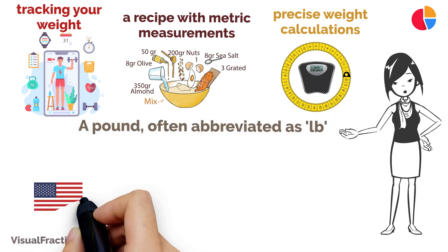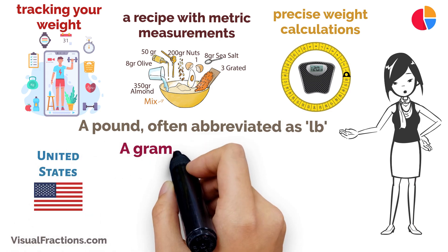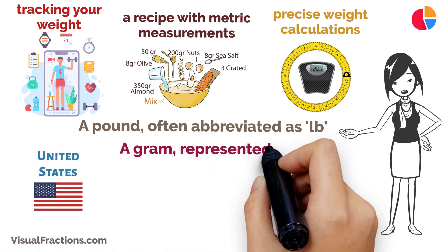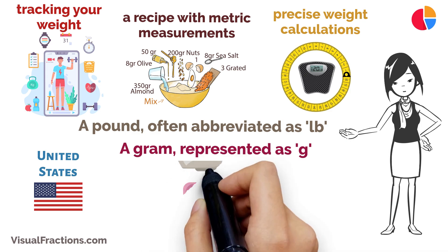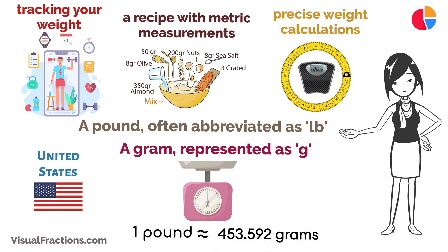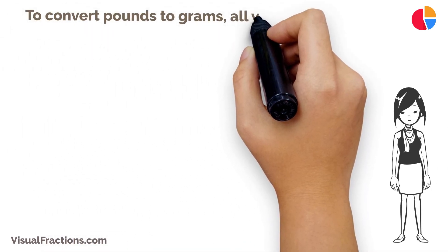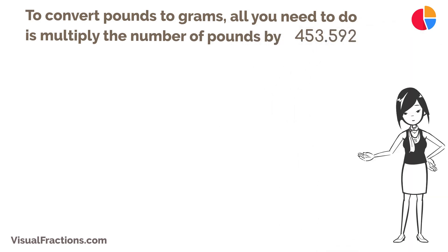Let's start with the basics. A pound, often abbreviated as lb, is a unit of weight commonly used in the United States and a few other countries. A gram, represented as g, is a smaller unit of weight in the metric system used worldwide. The key fact is that one pound is equal to approximately 453.592 grams.